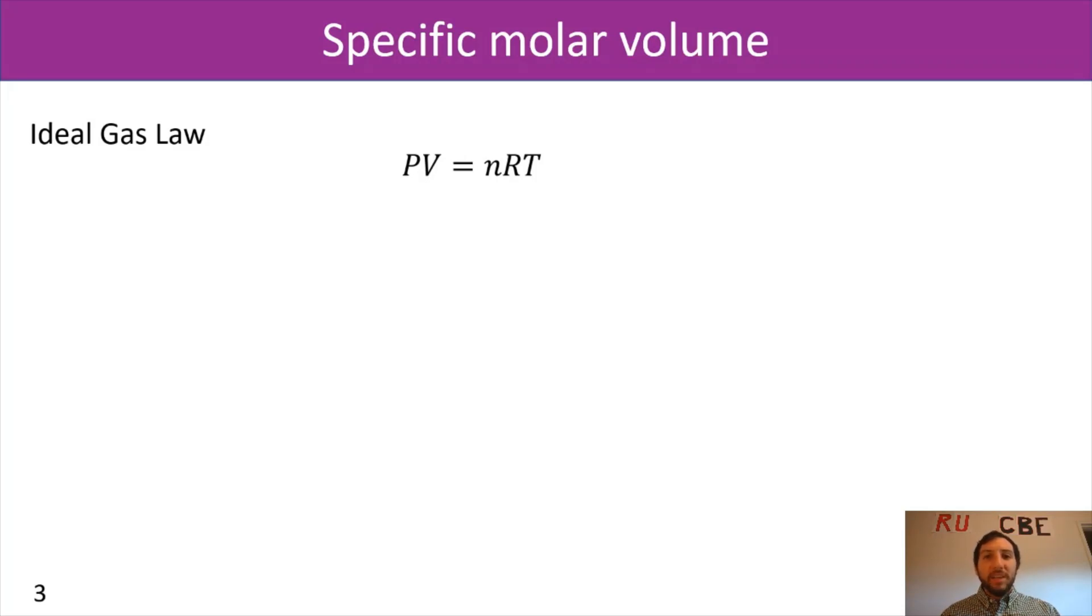We're going to bring the moles over to the left-hand side. So we have V over N for our specific molar volume. So that V hat is our specific molar volume. It's our volume divided by the number of moles we have, giving us specific molar volume.